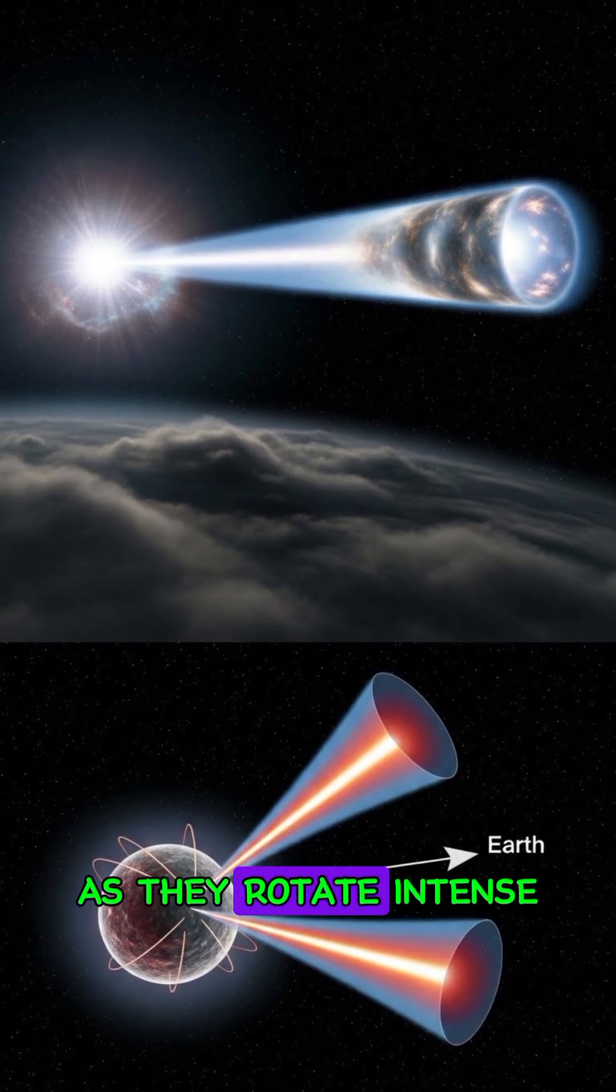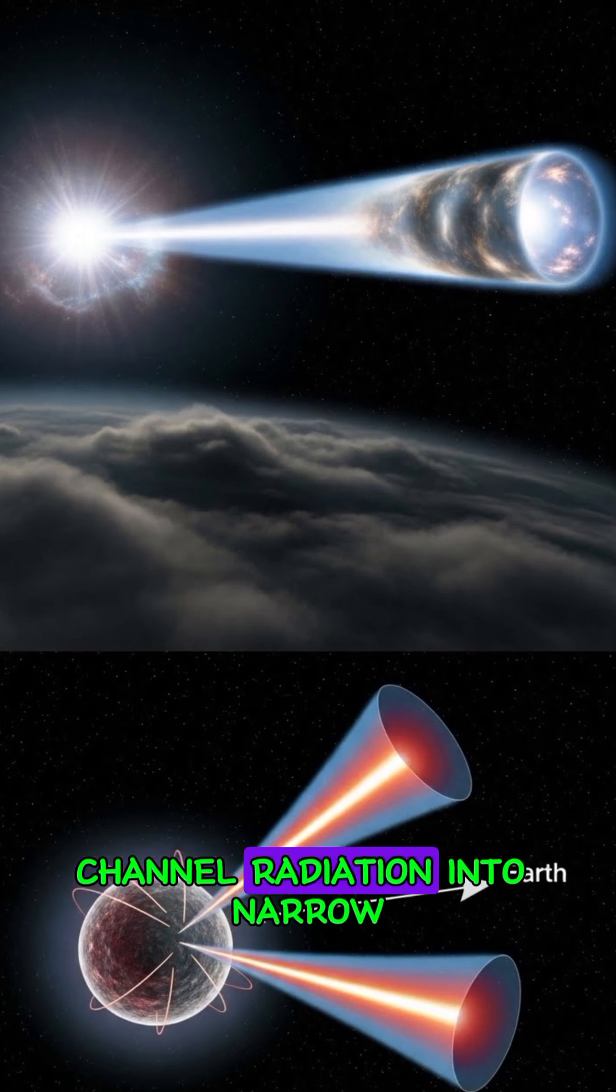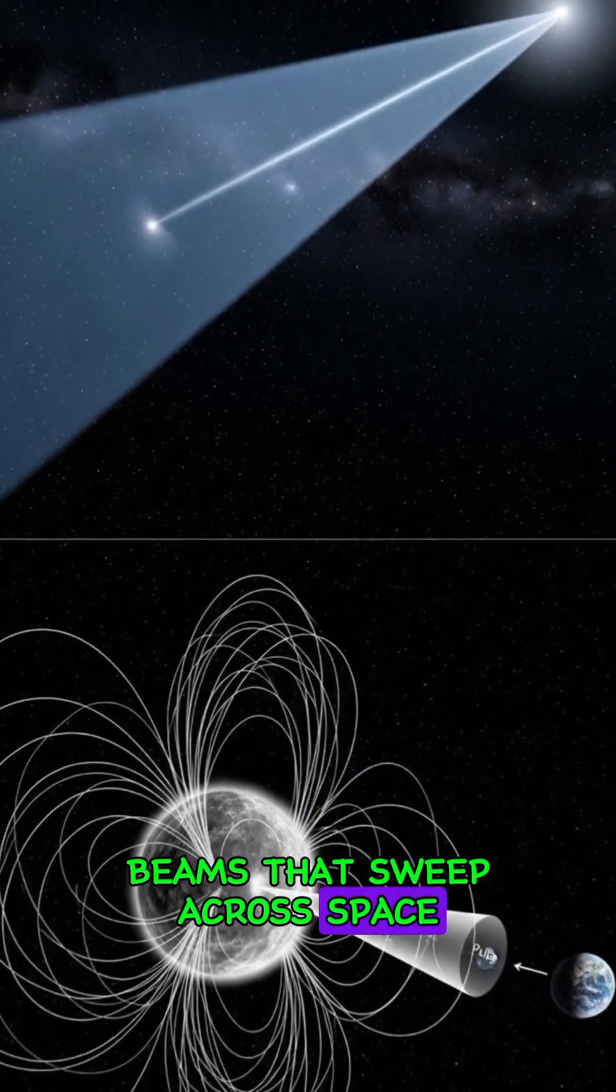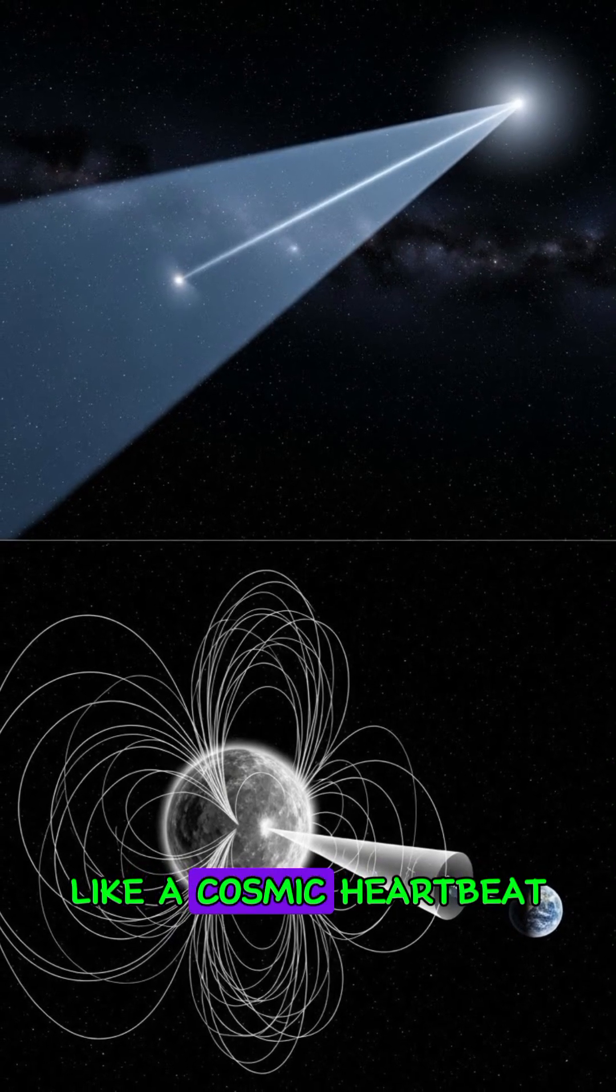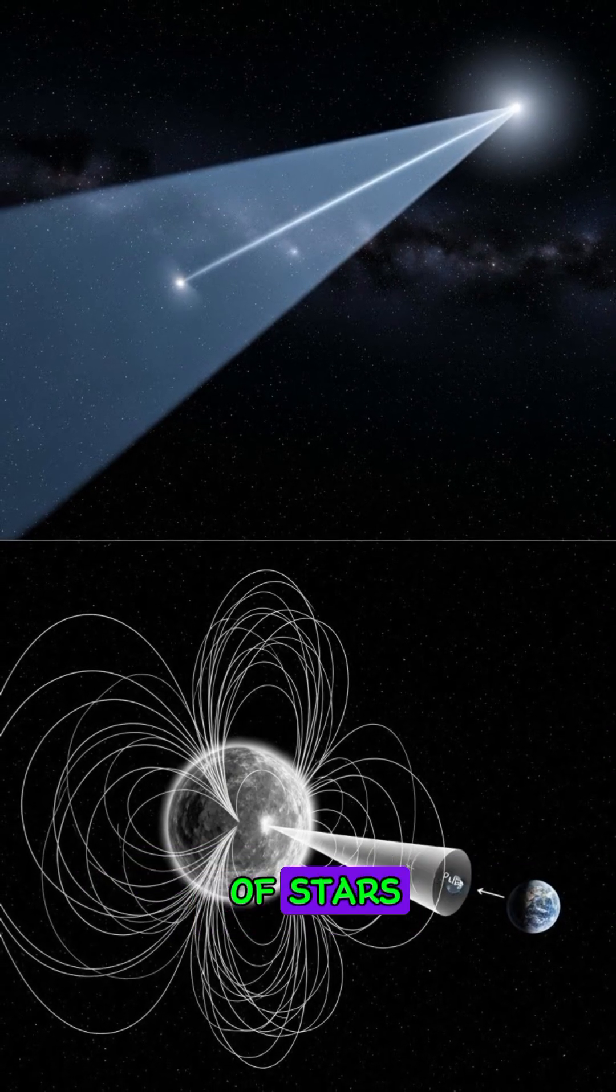As they rotate, intense magnetic fields channel radiation into narrow beams that sweep across space, and when those beams point toward Earth, we detect a pulse, like a cosmic heartbeat echoing from the graveyard of stars.